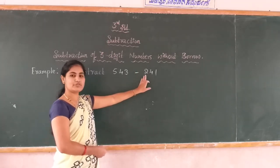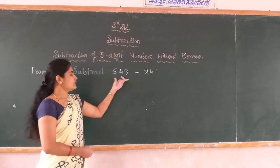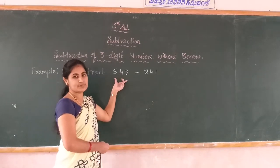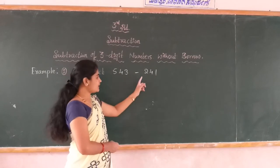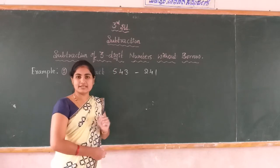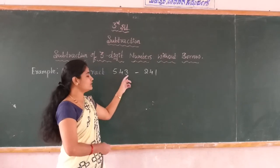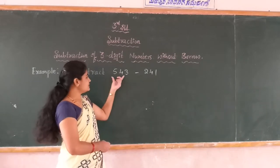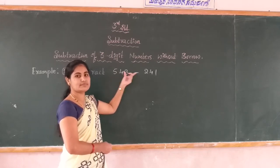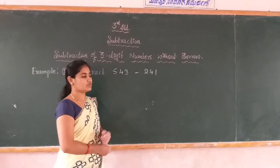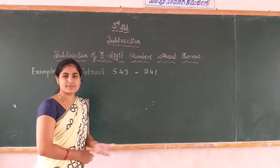Dear students, listen carefully. 543 is a bigger number as compared to 241. That is why you subtract the lesser number from the bigger number — you subtract 241 from 543 because 543 is the biggest number. First you write the subtraction box and write the numbers with respect to the place values.